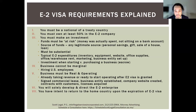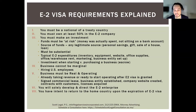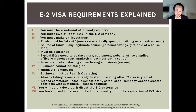The sixth requirement is that the E2 applicant — the investor — must be in a position to develop and direct the E2 enterprise. You must come to the US to develop and direct the E2 company and not work for another entity. You must come for the benefit of the E2 business, and you must be well positioned to develop and direct the company. That's something we'll establish in the application based on the applicant's background and education.